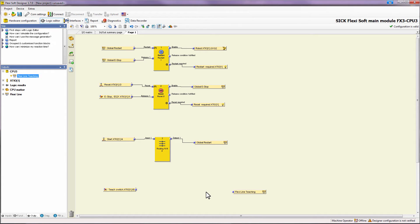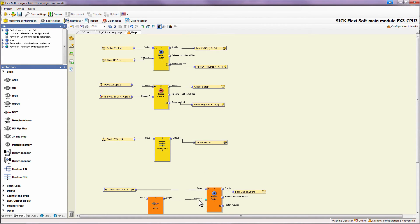In between we use a simple logic so the FlexiLine teach bit changes its status to high if it receives a rising edge from the teach button. This will trigger the teach function.